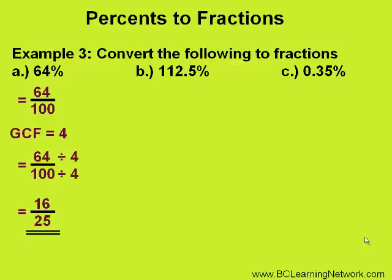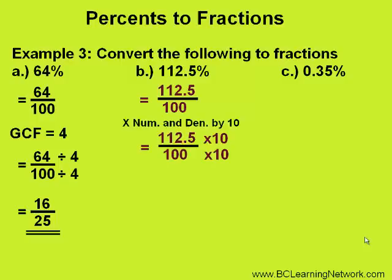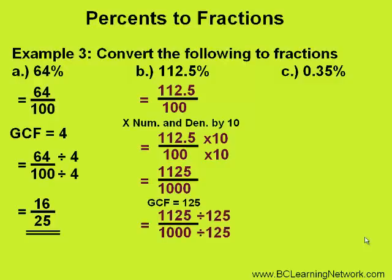Let's take the next one: 112.5%. Again, we start by putting 112.5 over 100. Now, in this case, because we have a decimal in the numerator, we want to eliminate this. To move that decimal one place to the right, we need to multiply by 10 — we have to do the same thing to both the numerator and denominator. So we'll multiply both the top and bottom by 10, giving us 1,125 over 1,000. Now we'll reduce this fraction. The greatest common factor is 125, so we'll divide the numerator and denominator by 125, leaving us with a reduced fraction of 9 eighths, or a mixed fraction of 1 and 1 eighth.